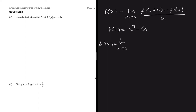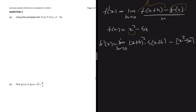So that will be f prime of x equals to the limit as h approaching 0. For the first part of the formula, everywhere where there is x we put x plus h. So it starts by saying x squared, so we're going to say x plus h, squared. Wherever there is x we put x plus h, so minus 5 times x plus h. And then we subtract the function itself, which is x squared minus 5x.